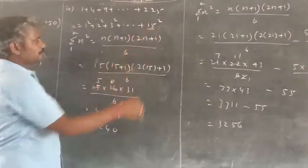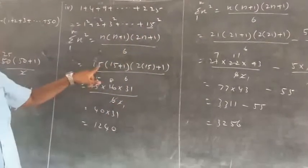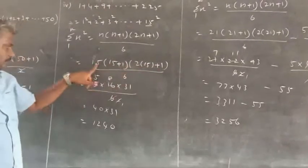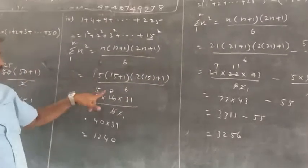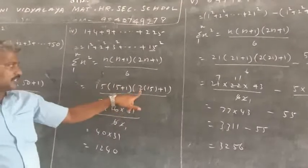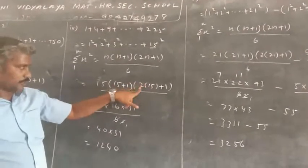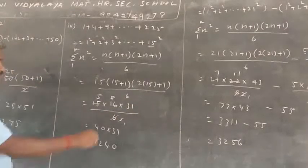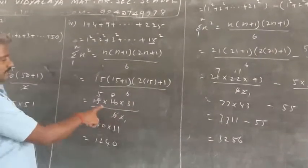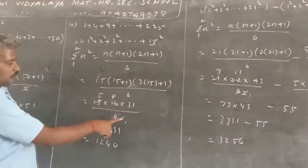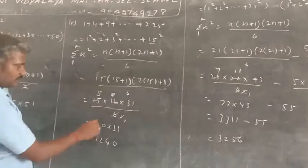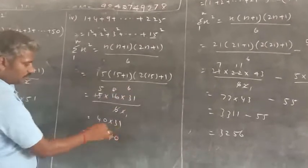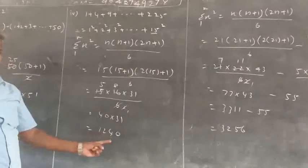So n value is 15. So 15 into 15 plus 1, 2 into 15 plus 1 by 6. 15 plus 1 is 16, 2 into 15 is 30 plus 1 is 31. So 15 into 16 into 31 by 6. This multiple means 1240.